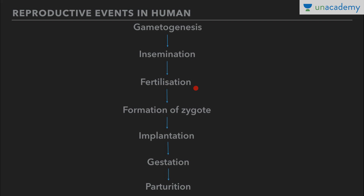Next is fertilization, that is fusion of male and female gamete, or sperm and ovum. Then after fertilization we have formation of zygote, which occurs in the ampulla of the oviduct. Then there is implantation, that is development of blastocyst and its attachment to the uterine wall, so after fertilization there is implantation of the developing zygote or embryo.